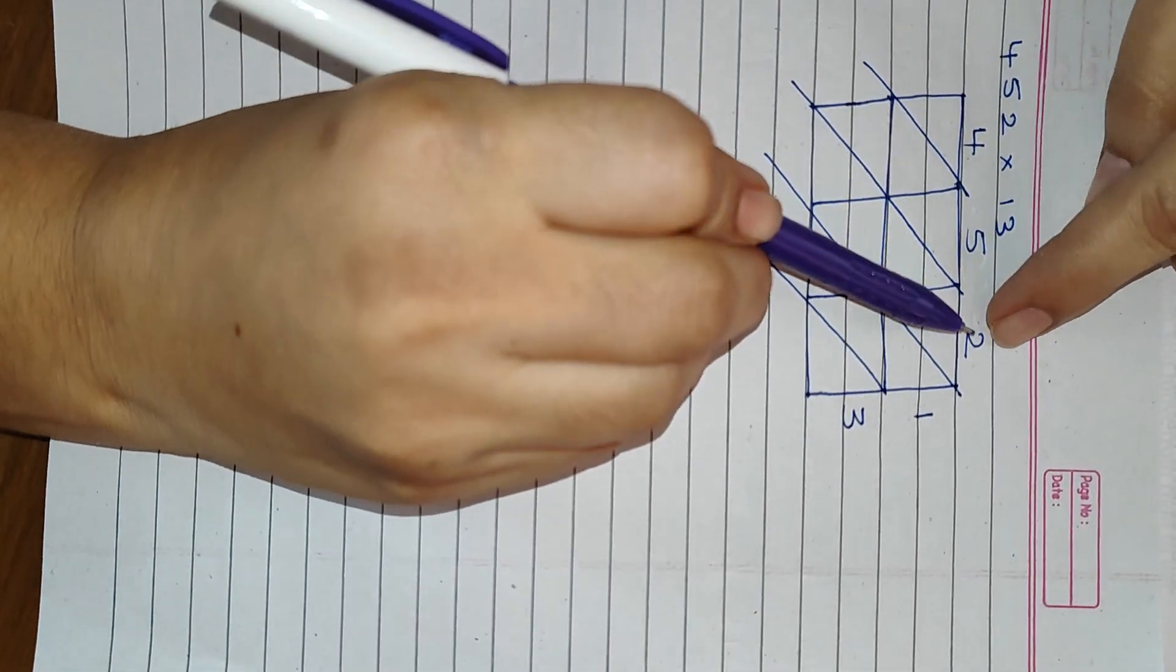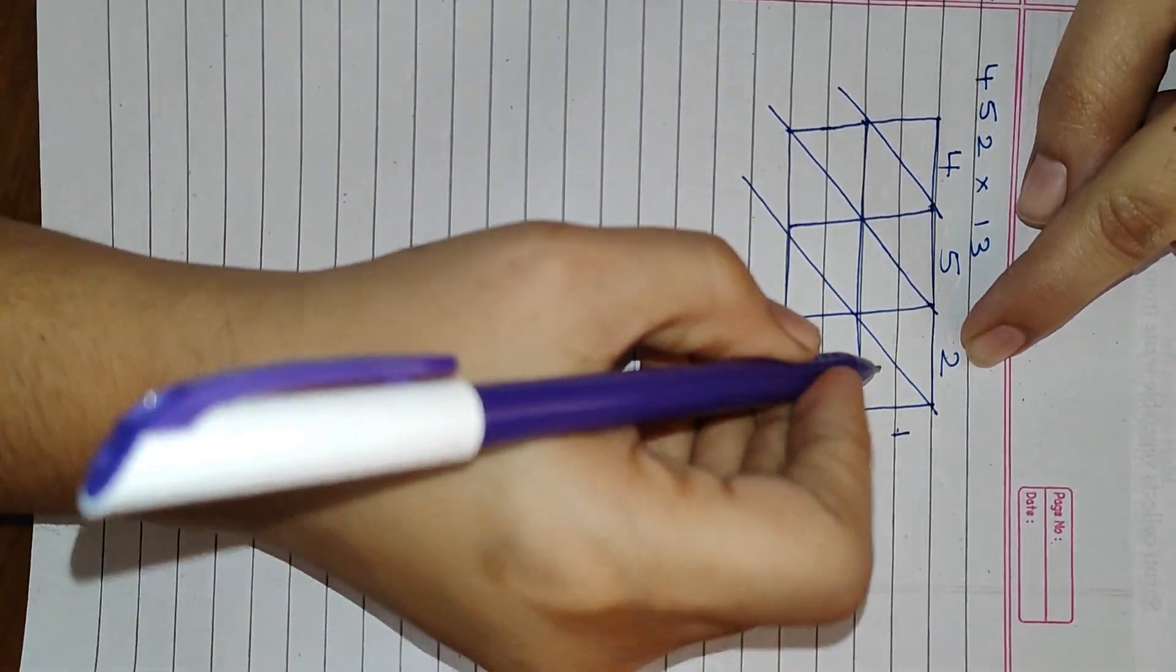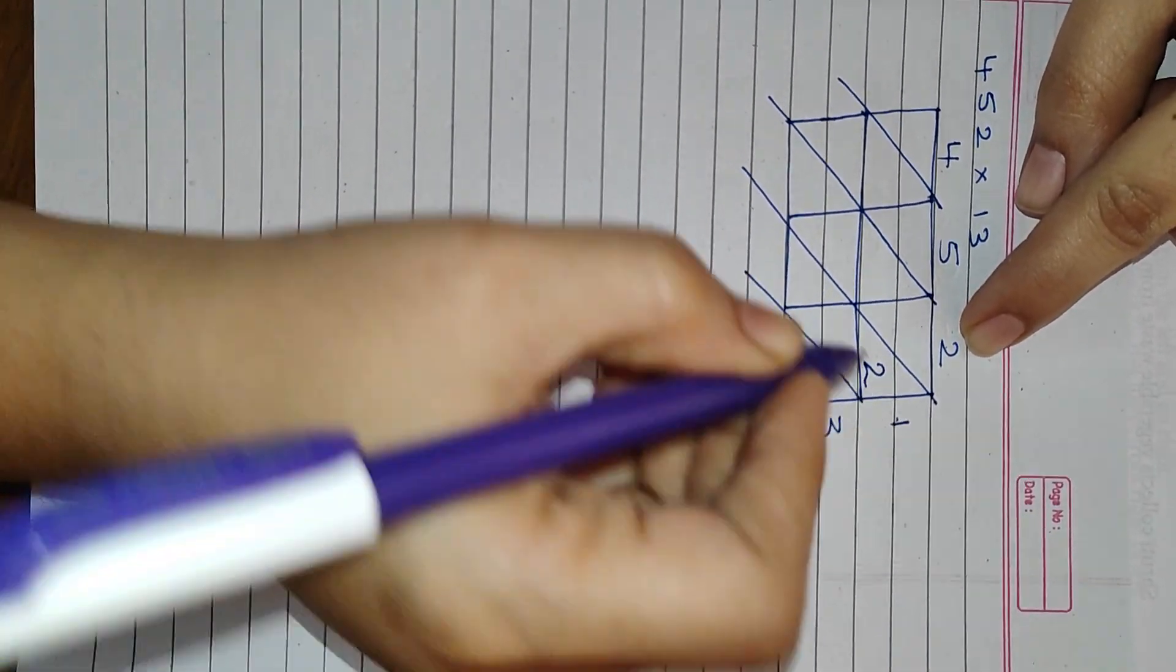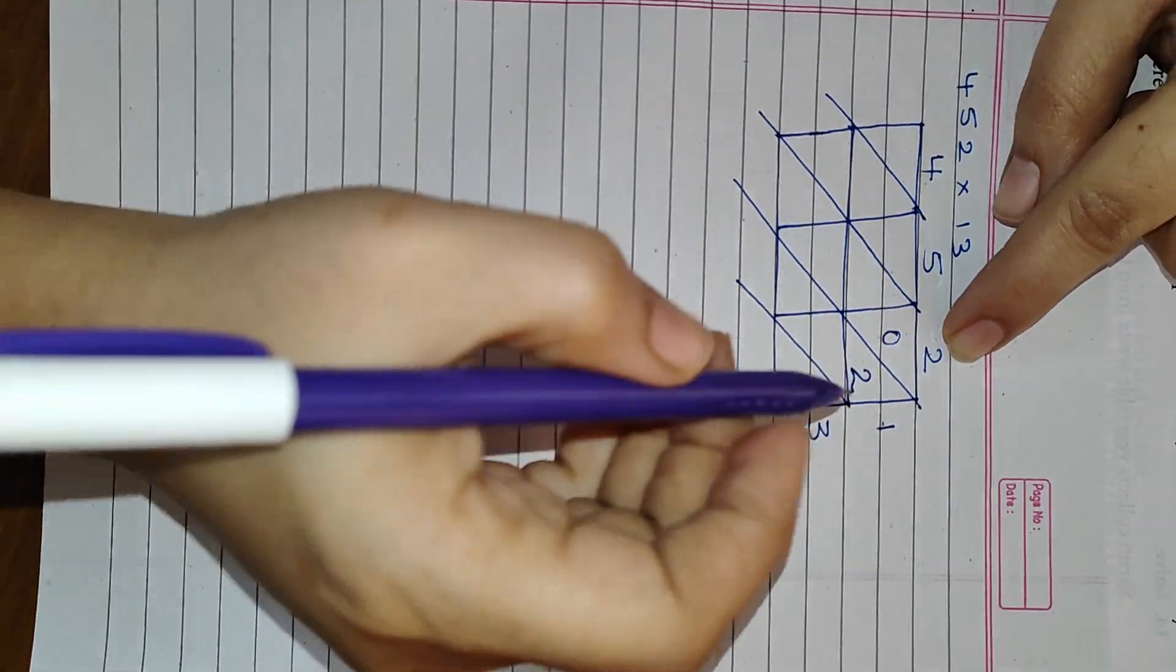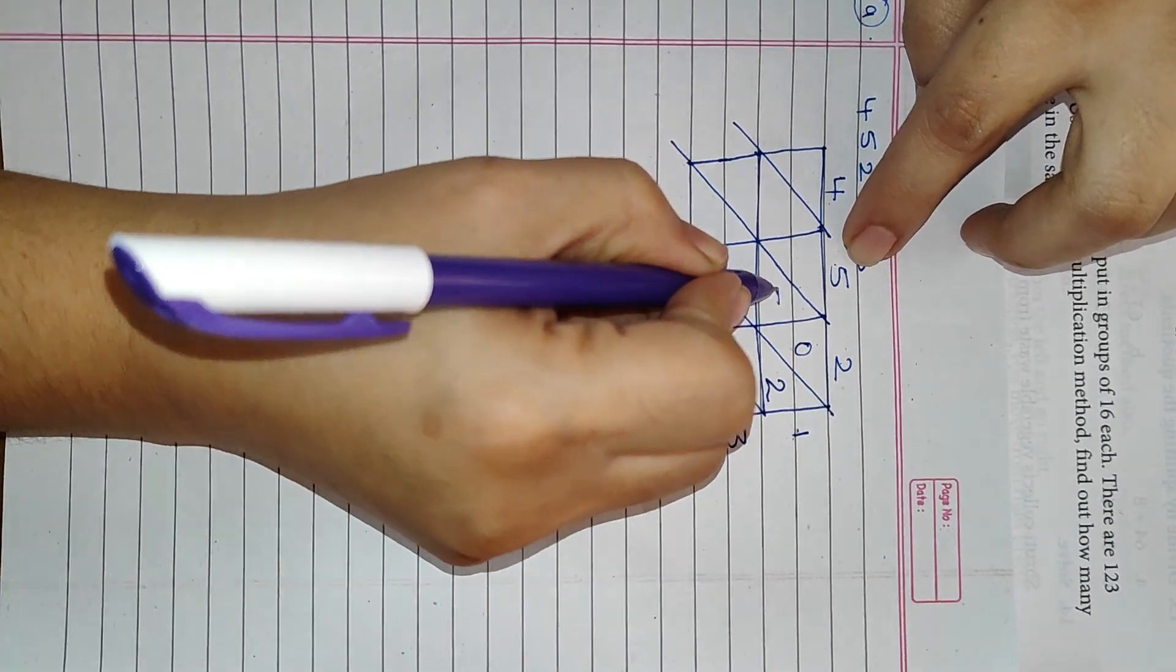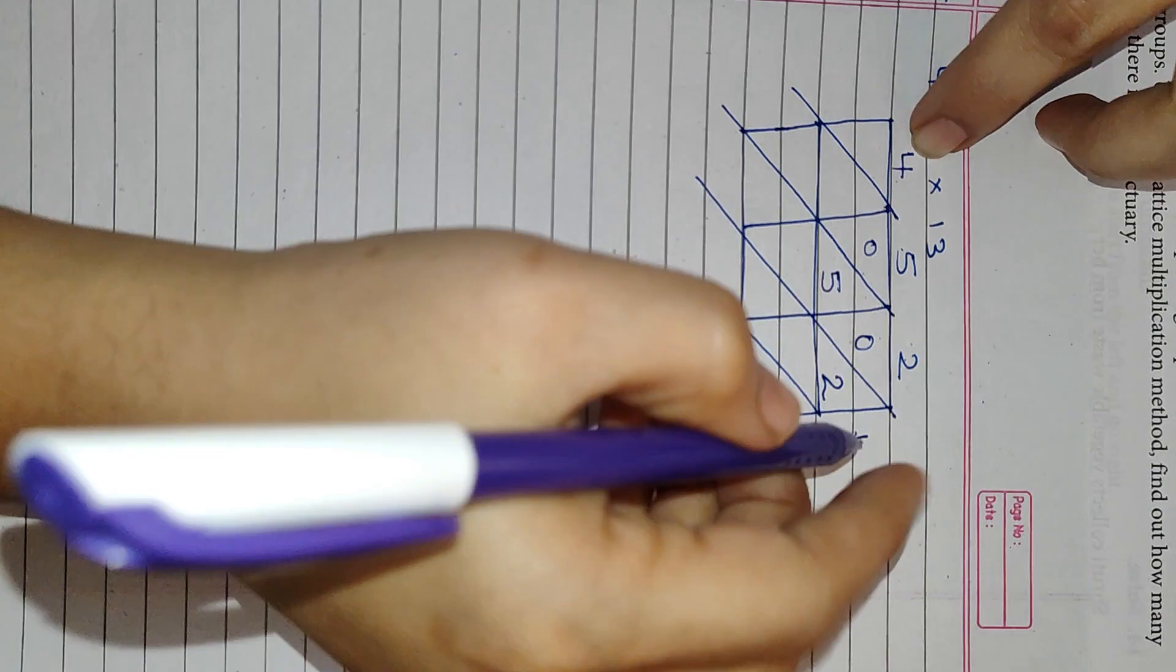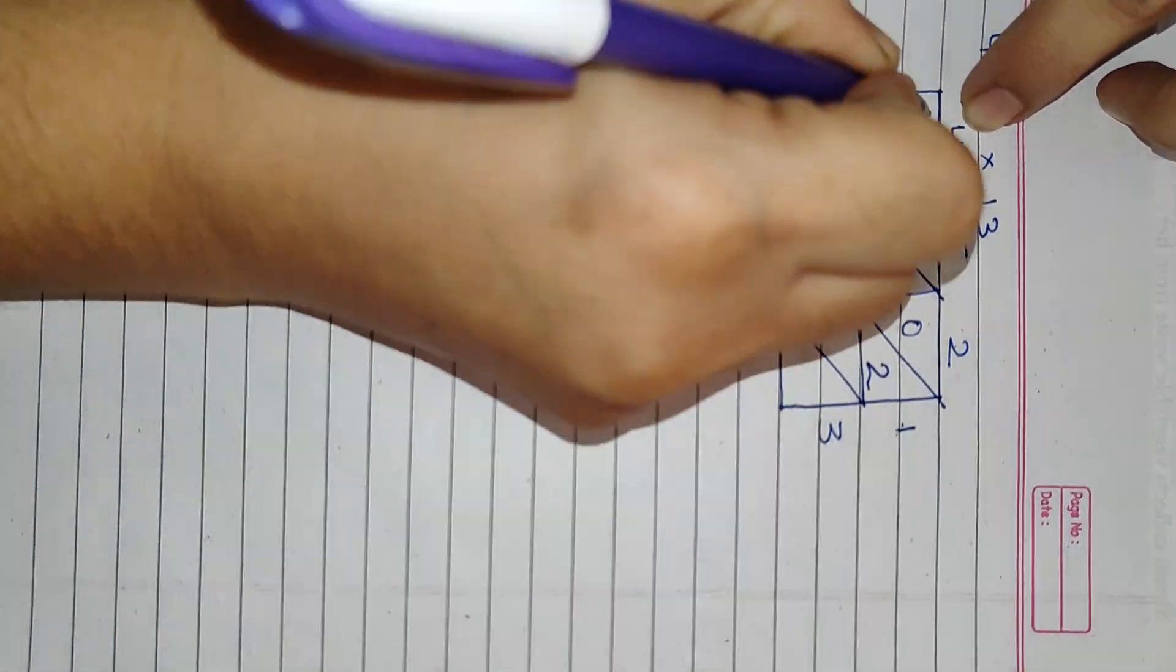Now let's do the multiplication. First, we are going to solve this area. 2 multiplied by 1 is 2. So 2 will come in this place and here you will write 0 because there is no other number given. Now 5 into 1 is 5. 5 will come here, again 0 here. 4 into 1 is 4. Simultaneously, 0 will come up.